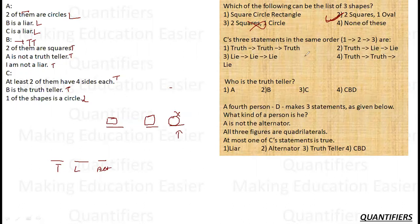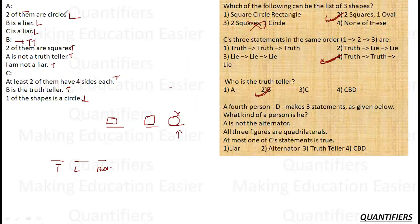For C's truth pattern, it's truth, truth, lie — so the fourth option is correct. Who is the truth teller? B is the truth teller. Now a fourth person D makes three statements. D says A is not the alternator — this is a true statement.